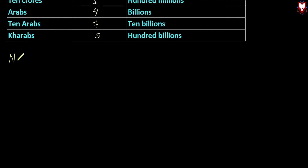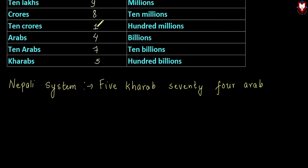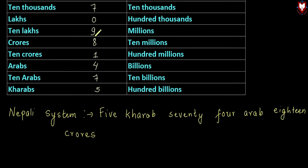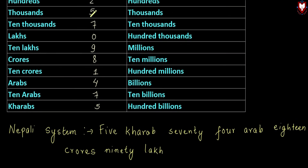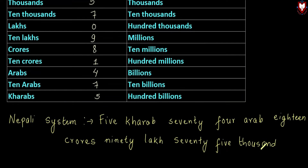So let's take this number in the Nepali system or the international system. In the Nepali system, this number is 5,74,18 crores — specifically 5,74,18,90,75,263. Breaking it down: 5,74 crore; 18,90 lakh; 75,000; and 263.